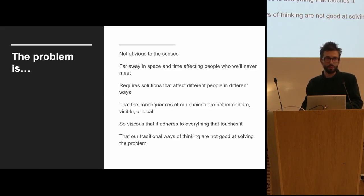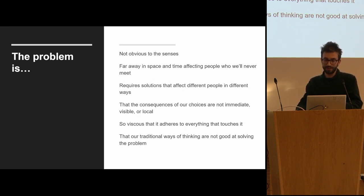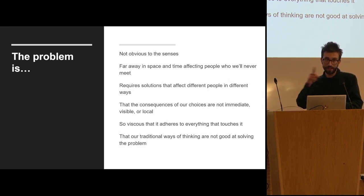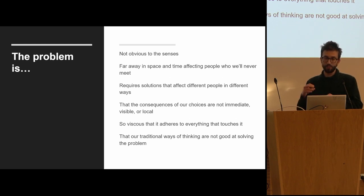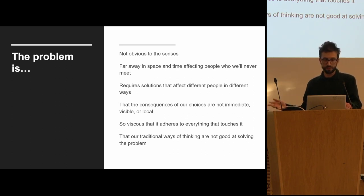We're not naive. We're aware that global warming is an extremely difficult problem to solve. In many ways, it's not surprising that humans haven't solved it yet. In my opinion, it's perhaps the most difficult problem that humans have ever tried to solve. It's not obvious to the senses. Global warming is far away in space and time, affecting people that we in this room and online will never meet. It requires solutions that affect different people in different ways. And the consequences of any choices that we make will not be immediate, visible or local. Global warming is so viscous, so sticky, that it adheres to everything that touches it, and our traditional ways of thinking are not good at solving this problem.